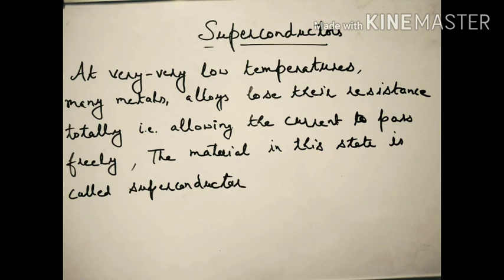So what are superconductors basically? We know that current easily flows through conductors and they have very low resistance. But what happens at very very low temperature? The resistance becomes zero. As the resistance is zero, the current passes freely through it with no obstruction. So at that stage we get a material called a superconductor.